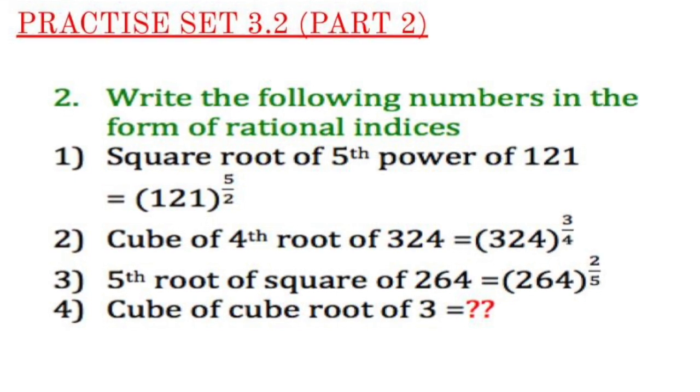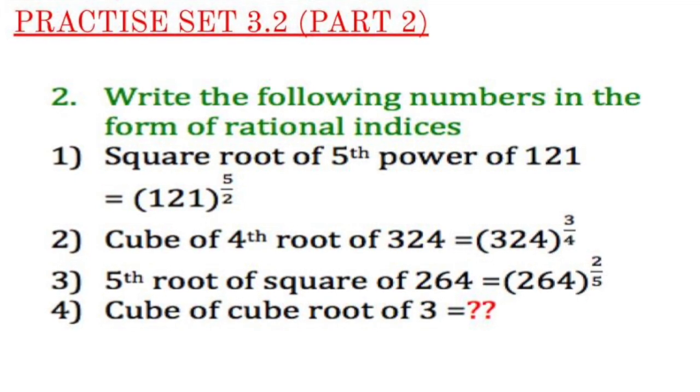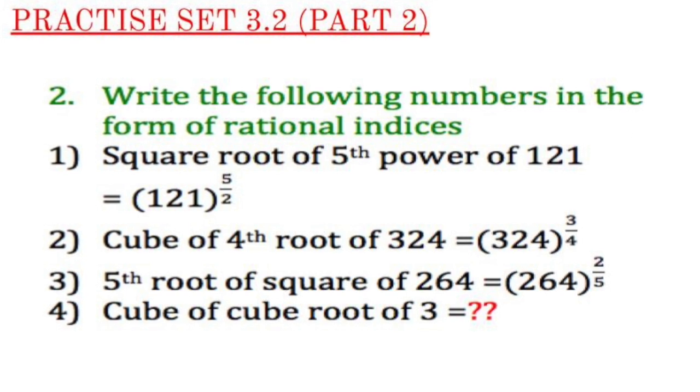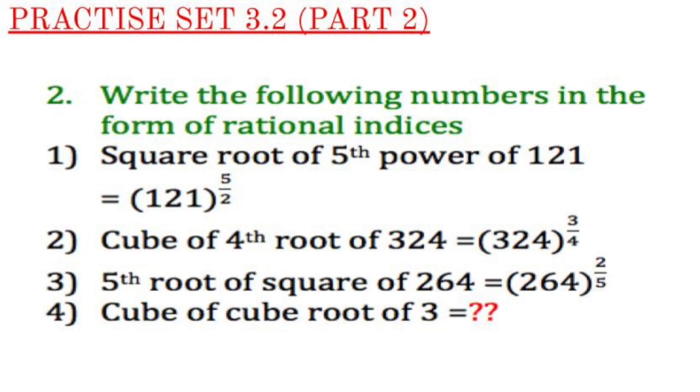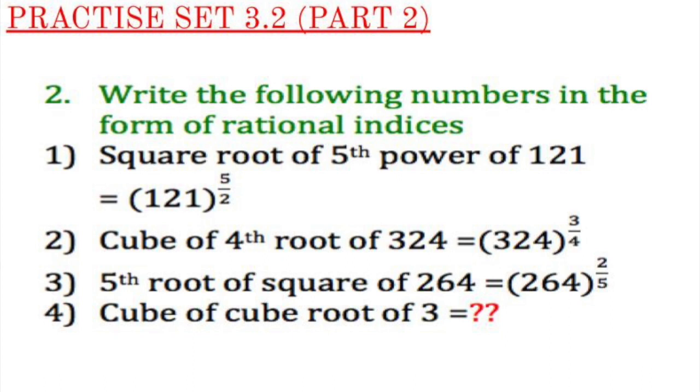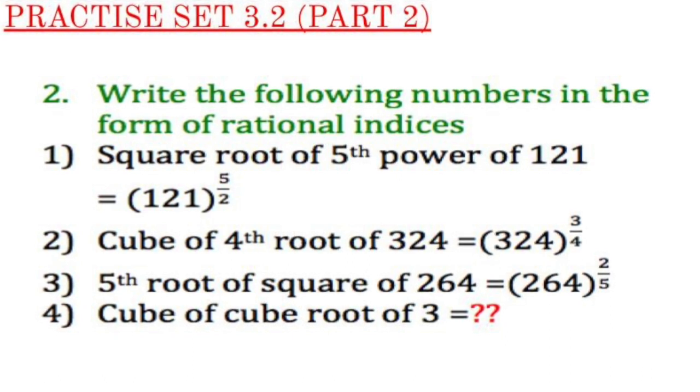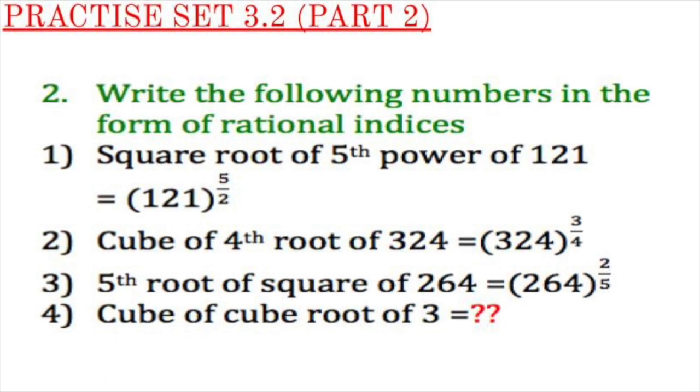The third sum 5th root of square of 264. So here 5 goes as the denominator and 2 goes as the numerator because the word square is mentioned. So it will be 2 which will go as the numerator. Hope this is all clear to you.